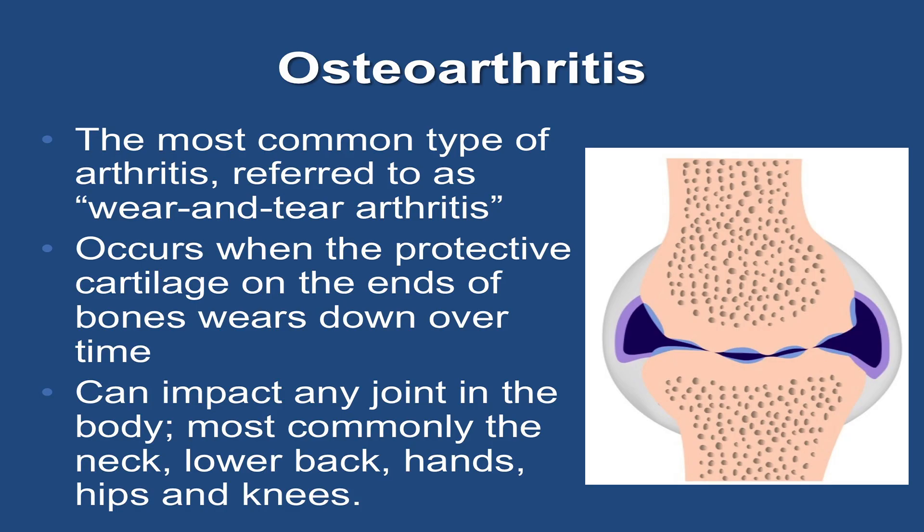Osteoarthritis is the most common type of arthritis, referred to as wear and tear arthritis. It occurs when the protective cartilage on the ends of bones wears down over time. Osteoarthritis can impact any joint in the body. However, it most commonly affects the neck, lower back, hands, hips, and knees.